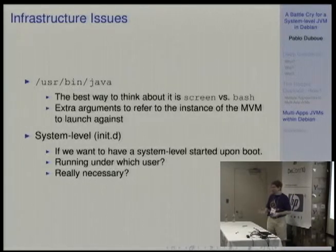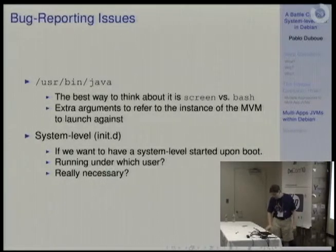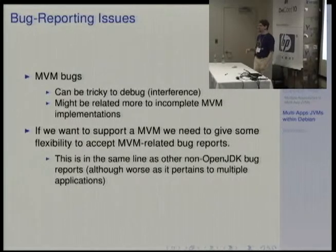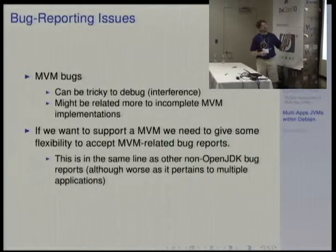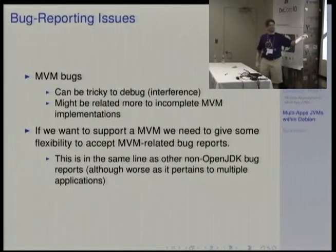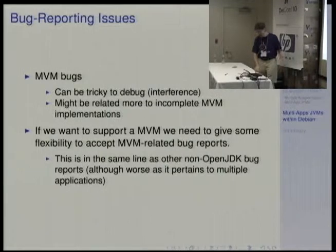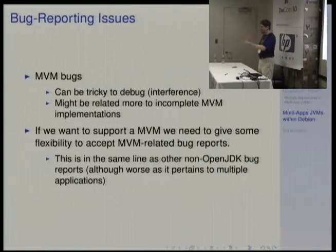A more hairy issue is bugs. You have an application that runs fine, then you put it in an MVM and some bug happens — and here you get interference between maintainers. It's not just 'let's add an MVM to Debian and we're done.' If we add it, we'll have to put up with these issues, and they are going to be very difficult to find and track. In many cases it may just be that this interaction is showing a bug in the code, or it's a bug in the MVM implementation. This is similar to the issue of just having multiple JVMs within Debian, and I understand that as a manpower issue we are moving away from multiple JVMs and just focusing on OpenJDK.